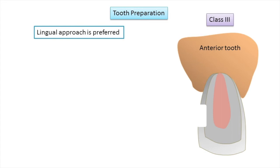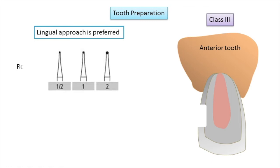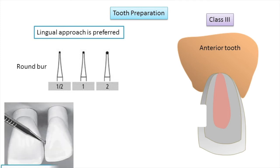In most cases, a lingual approach is preferred because facial enamel is conserved for enhanced aesthetics, and unsupported facial enamel may be preserved to aid in bonding of composite resin. However, a facial approach may be needed if caries is located more facially or if teeth are irregularly aligned. Cavity preparation is initiated using a number ½, 1, or 2 round bur. The point of entry is located within the incisogingival dimension of the lesion, as close to the adjacent tooth as possible without contacting it, with the bur held perpendicular to the enamel surface.